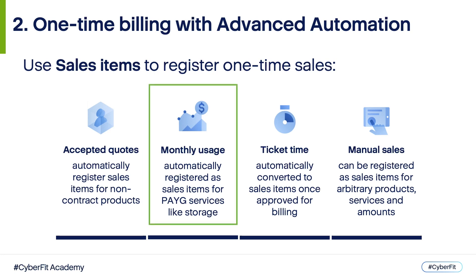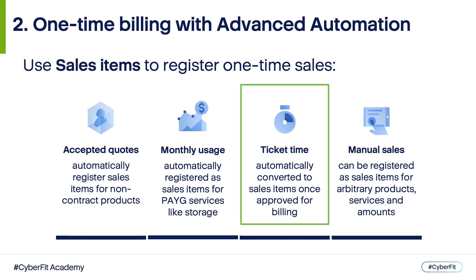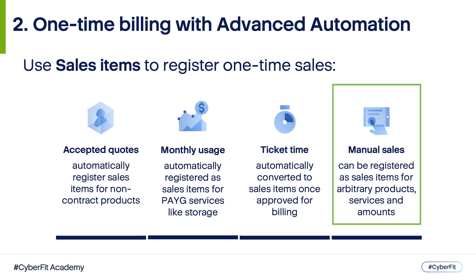Monthly Service Usage: all Acronis services measured in bytes and seconds will be automatically registered as sales items on the first day of each month, once this information is available for a completed month. Examples of such services are Acronis hosted storage or compute points for disaster recovery — no need to create separate contract parts for them. Ticket Time: once you close a Service Desk ticket and approve the spent time for billing, it will be automatically registered as a sales item for the respective quantity of support hours. Finally, Manual Sales Items can be registered any time to charge your clients for arbitrary products, services, and amounts.